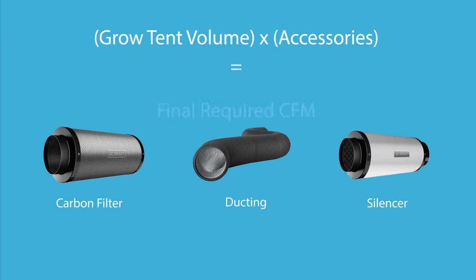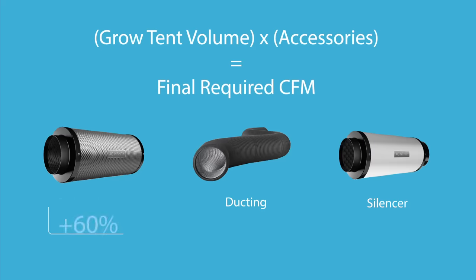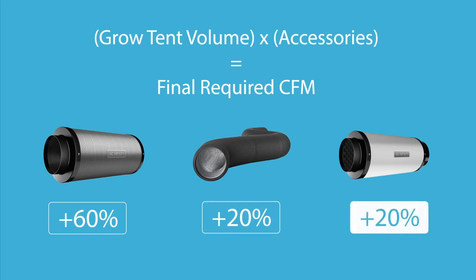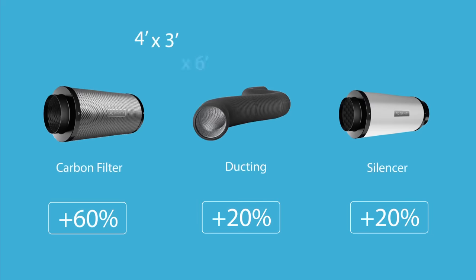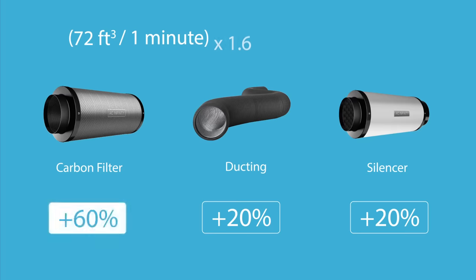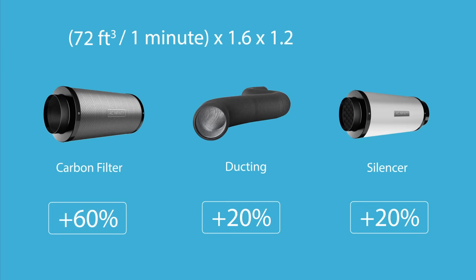You would need to increase the required CFM by each component you add to your system. Your calculations can use estimated efficiency percentages of each component, since accessories on the market vary greatly. For example, a 4x3x6 grow tent needs 72 CFM. To factor in new accessories, we would need to increase the CFM by 60% for the filter, 20% for the ducting, and 20% for the silencer, giving us a minimum requirement of 166 CFM.